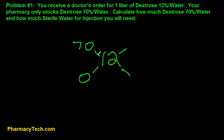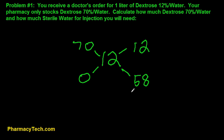And we're going to subtract diagonally, smallest from the largest. 70 minus 12 is 58. 12 minus 0 is 12. We're going to add these two together, and that will give us 70.